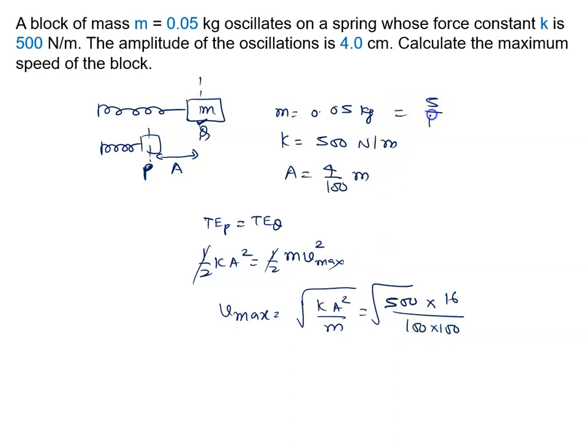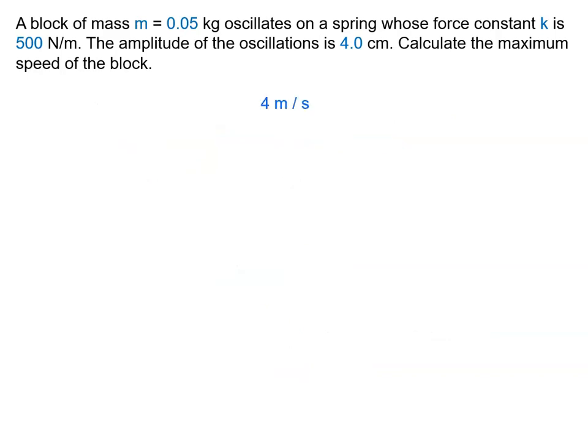A square is 4 times 4, which is 16 upon 100 into 100. The mass value is 5 by 100. Now we will calculate: 500 cancels with 100, 100 cancels here. V max is given by 4 meter per second. So the right answer of this problem is 4 meter per second.